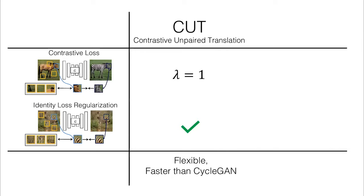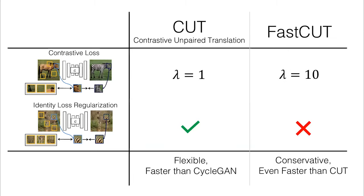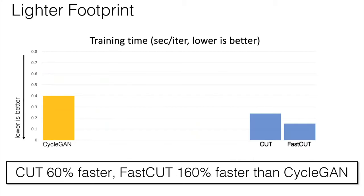What we found qualitatively is that it's a bit more flexible than CycleGAN, and also faster to train due to its one-sided nature. We can make it even faster by removing the identity loss regularization term. We're going to turn up the contrastive loss by a larger factor, which causes the system to be more conservative. It's actually even faster than CUT. I can show you the training time here. The y-axis is training time, so lower is better. On the left, we see CycleGAN shown in yellow. On the right, we see CUT and FastCUT, and they're 60% and 160% faster than CycleGAN. So FastCUT is more than 2x faster than CycleGAN to train.